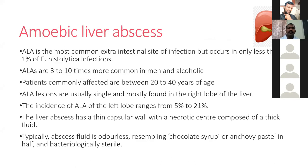Amoebic liver abscess is the most common extra-intestinal infection of Entamoeba histolytica. It is more common in males and in alcoholic patients, typically affecting middle-aged males between 20 to 40 years. Amoebic liver abscess is usually solitary and most commonly affects the right lobe of the liver, though the left lobe is affected in 20% and bilobar involvement in 5-10%. The abscess has an encapsulated wall with central necrotic material, typically described as anchovy paste or chocolate syrup, which is bacteriologically sterile.